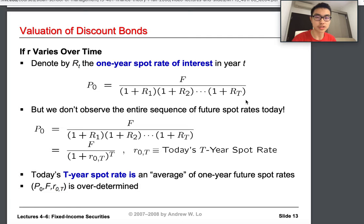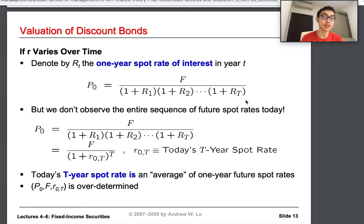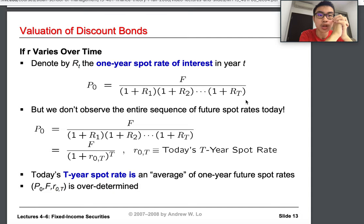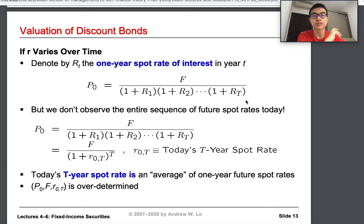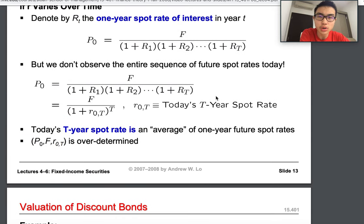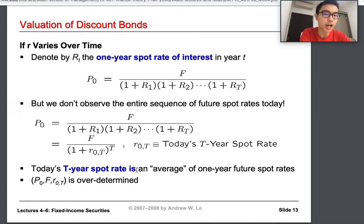When r varies, the denominator is the product of (1 + r₁) times (1 + r₂) times ... times (1 + r_t). The problem is that we don't observe the entire sequence of future spot rates today. We know the formula has r₁, r₂, r₃, up to r_t, but we don't actually know those numbers accurately because we are not sure how interest rates will evolve. Today's t-year spot rate is essentially a geometric average of the one-year future spot rates.